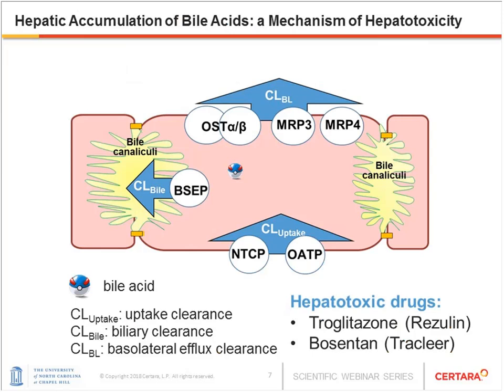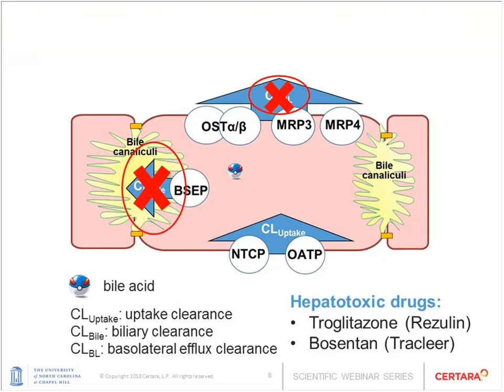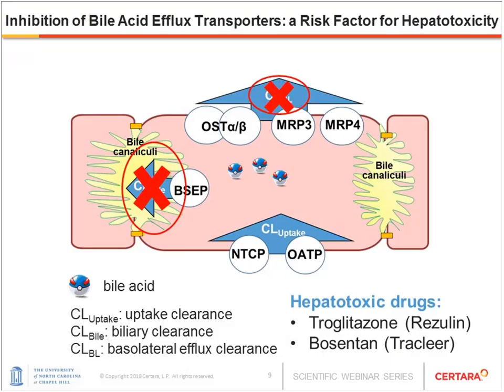One of the toxicity mechanisms is extensive hepatic accumulation of bile acids. Bile acids can be synthesized in the liver, or circulating bile acids in the blood can be taken up into hepatocytes by uptake transporters such as NTCP and OATP. After getting into hepatocytes, bile acids can be effluxed back into the bloodstream through basolateral efflux transporters MRP3, MRP4, or OST alpha-beta. Predominantly, bile acids will be excreted into the bile canaliculi through biliary transporter BSEP. When these efflux routes are inhibited, bile acids accumulate in the liver, leading to hepatotoxicity.